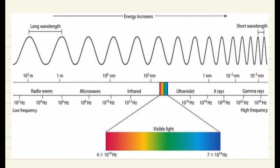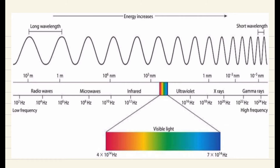Then comes microwaves, they have slightly lesser wavelength. Then we have the infrared waves, then visible light waves. The range of the wavelengths for the visible light rays varies from — I'll write it over here — from 400 nanometers.